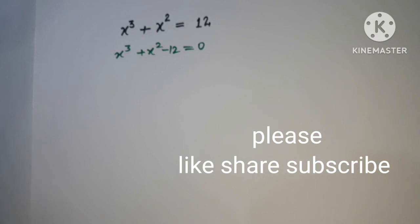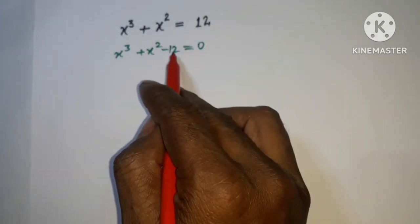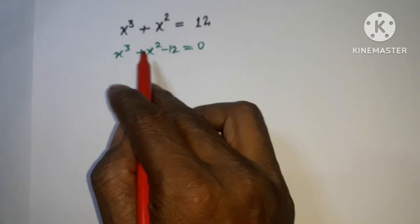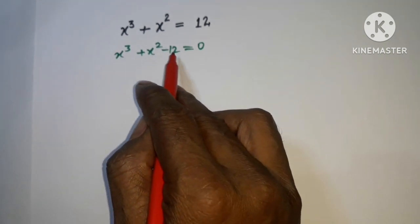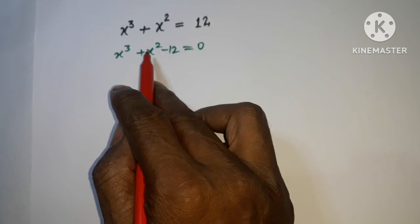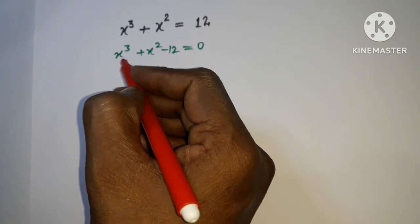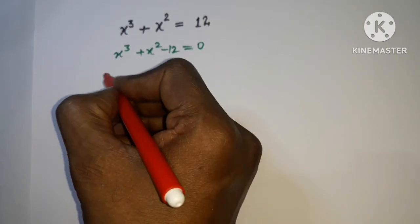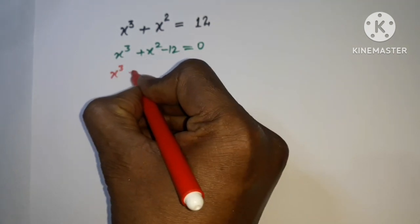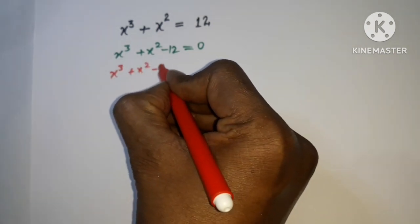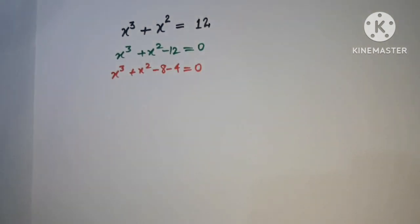We know that 12 is the sum of 8 plus 4, where 8 is the cube of 2 and 4 is the square of 2. So we can write: x³ + x² - 8 - 4 = 0.